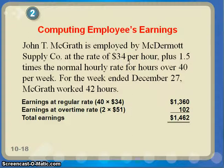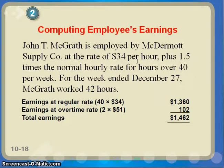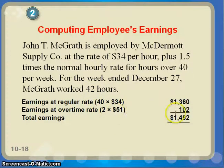Looking at this scenario: John McGrath is employed by McDermott Supply Company at the rate of $34 an hour, plus time and a half — 1.5 times the normal hourly rate — for hours over 40 per week. This person will make $34 an hour, and for anything over 40 hours, they'll make $34 times 1.5, or $51 an hour. This person worked 42 hours. For the first 40 hours at $34, that's $1,360. For 2 overtime hours at $51, that's $102. So their total earnings are $1,462. Overtime money accumulates quickly and is a nice thing to have in your paycheck.